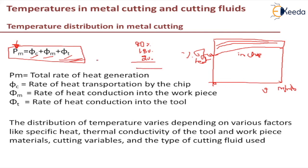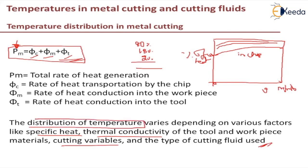This is the heat balance — how temperature is distributed across the chip, tool, and workpiece. Temperature distribution varies depending on various factors such as specific heat, thermal conductivity of the tool and workpiece materials, cutting variables, and if a cutting fluid is used, what type of cutting fluid is used.